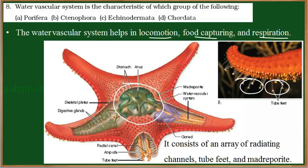There are also radiating channels and a madreporite. Here we can see the radiating channels, madreporite, and the tube feet — all of these arise from the water vascular system. It is required for locomotion, capturing food, and respiration, including the exchange of oxygen and carbon dioxide.